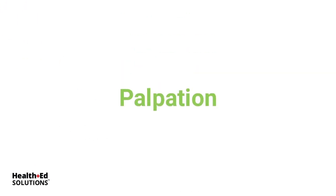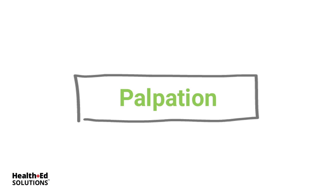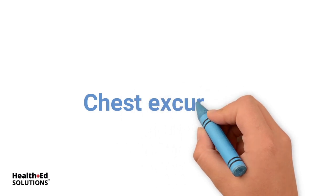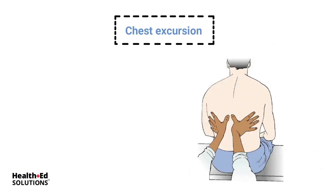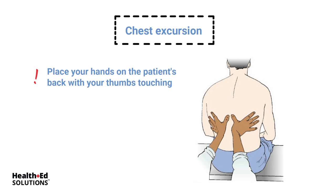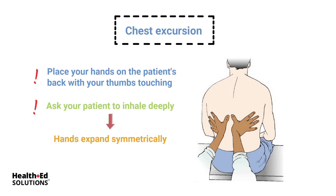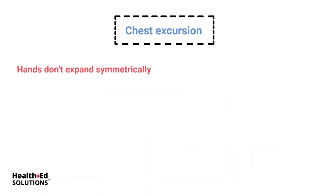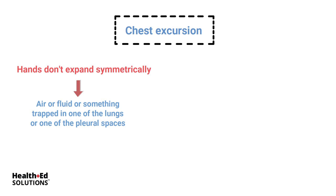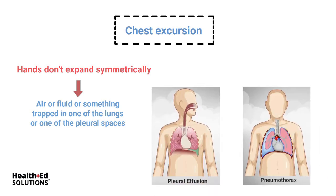Now we're going to move on to palpation, which is really important in our critically ill patients. The first one is chest excursion. This is the technique where you as the nurse place your hands on your patient's back with your thumbs touching, and you ask your patient to inhale deeply. You're looking for your hands to expand symmetrically. If they don't expand symmetrically, there's either air or fluid trapped in one of the lungs or pleural spaces — it could be a pleural effusion or a pneumothorax.